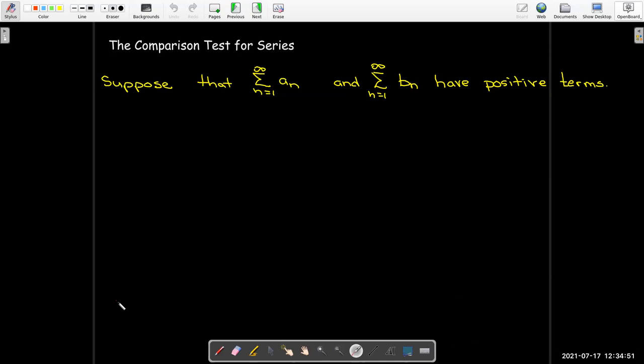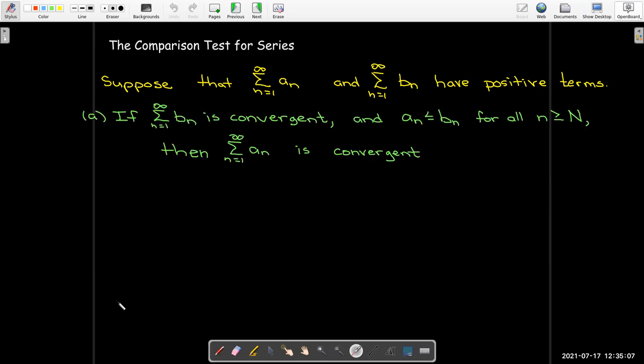So let's write that down formally. Suppose I have two series and they both have to have positive terms. So that's a limitation for our comparison test. You need to have series with positive terms. If the series with the B_n terms is convergent and A_n is smaller than B_n, so the corresponding terms of A_n are smaller than B_n, then the smaller series is convergent as well.